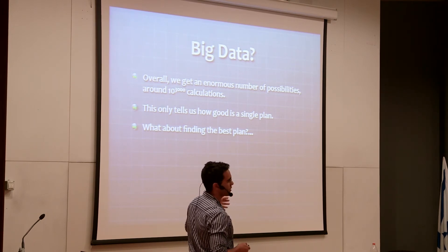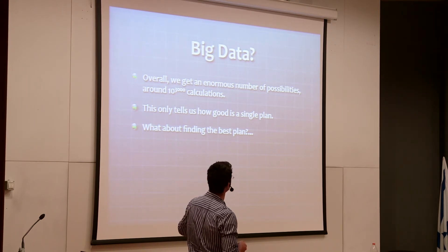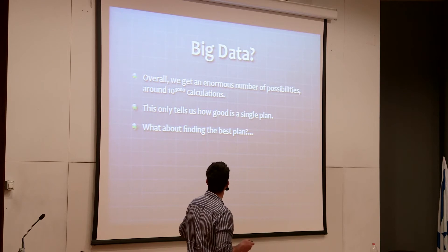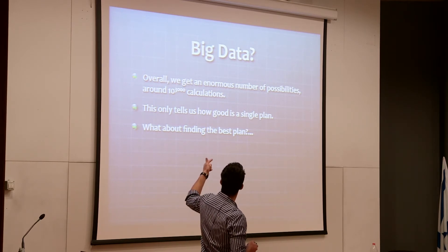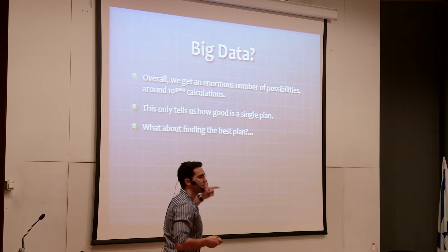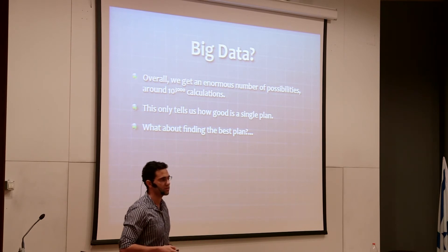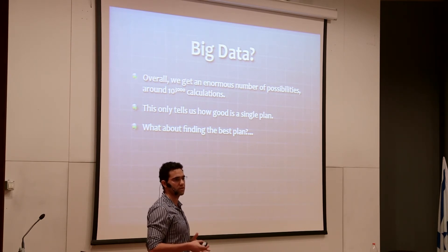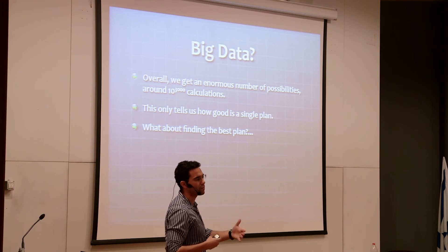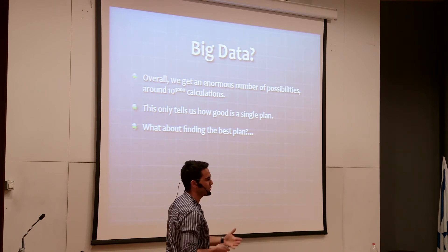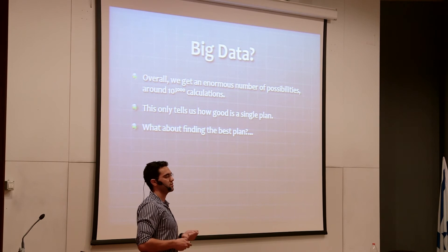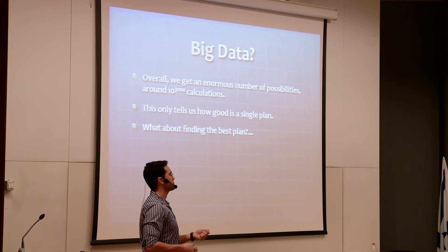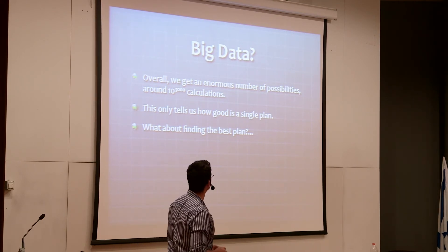Overall, in this simplified illustration, we get around 10 to the power of 3,000 calculations — that's a one followed by 3,000 zeros — for all the different possibilities over the next three months. And that only tells us how good a single plan is. So what are we going to do to find the best plan?